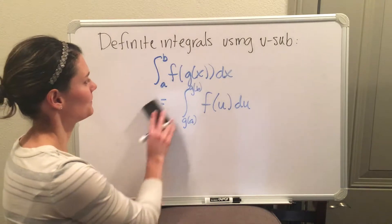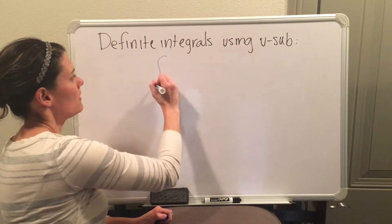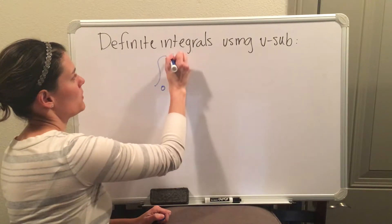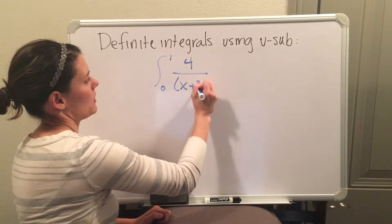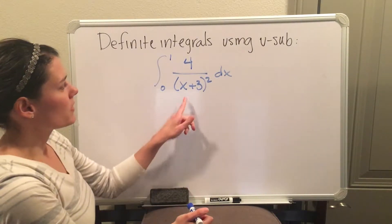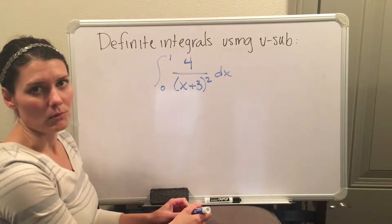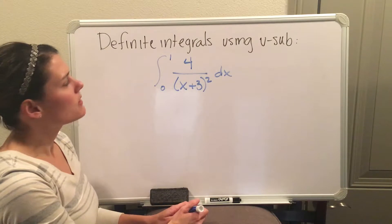So let's do some examples. Let's do the definite integral from 0 to 1 of 4 over x plus 3 squared. This function right here is not one of your rules, but it is a composite function, and so you will need to use u-substitution to solve it.